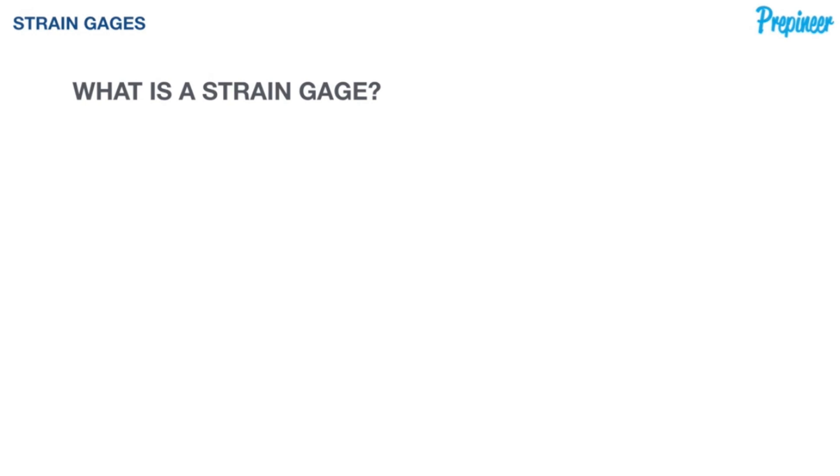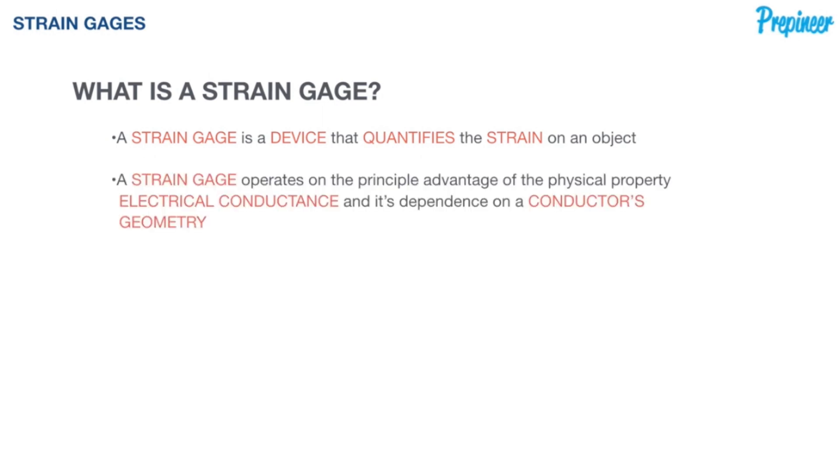First, let's start off with what a strain gauge is. A strain gauge is a device that quantifies and measures the strain on an object. A strain gauge operates on the principal advantage of the physical property of electrical conductance and its dependence on a conductor's geometry.